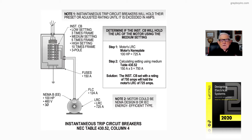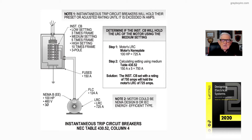Note one basically talks about an instantaneous trip setting — once it's set, that device will not trip until you exceed its setting. Note two points out that this could be a NEMA B high-efficiency motor or a European design E-type motor. You need to identify what type of motor you have so you know what type of device to use to start it, and it's based mainly on design, as we'll see going through chapter 18.